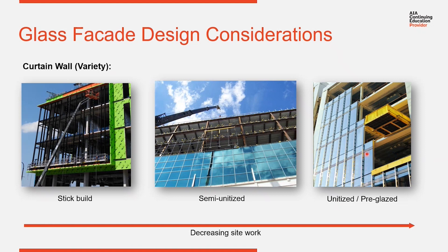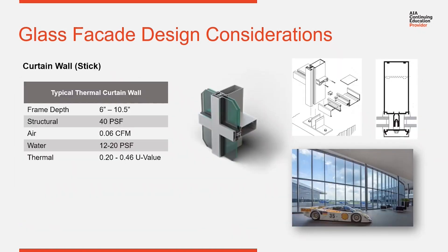Next is unitized. These are pre-assembled and pre-glazed, then set one by one. Once they're set, it's closed up — there's nothing else that needs to be done on the exterior. It's a very quick way to enclose a building. Notice the arrow moving across where it says 'decreasing site work.' As you move from stick construction to pre-assembly to unitized, you're reducing the amount of labor in the field and moving it to the shop, where you have greater control over labor, quality control, and better work conditions. Moving from stick toward modular construction means moving labor from the field into a shop environment.